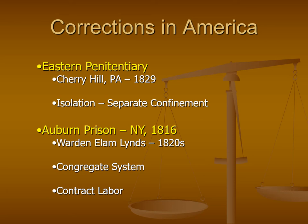Even though Auburn Prison was opened a little bit earlier than Eastern Penitentiary, it was really the changes that took place in the 1820s that make Auburn considered the second. Usually when we go through a historical approach, we think of Eastern Penitentiary, which opened in 1829, as our first pure example of the penitentiary model, followed by Auburn Prison.